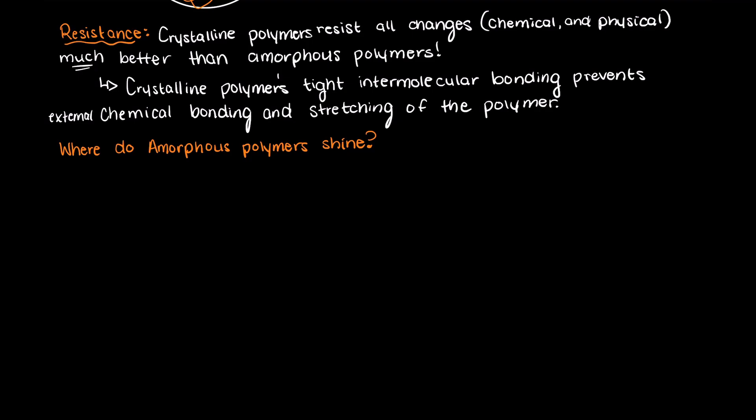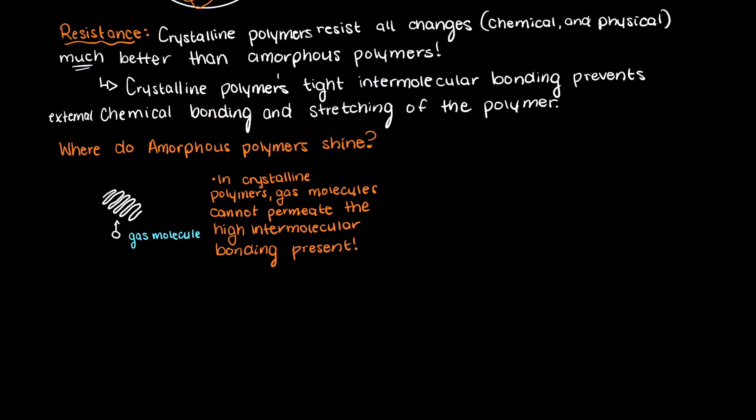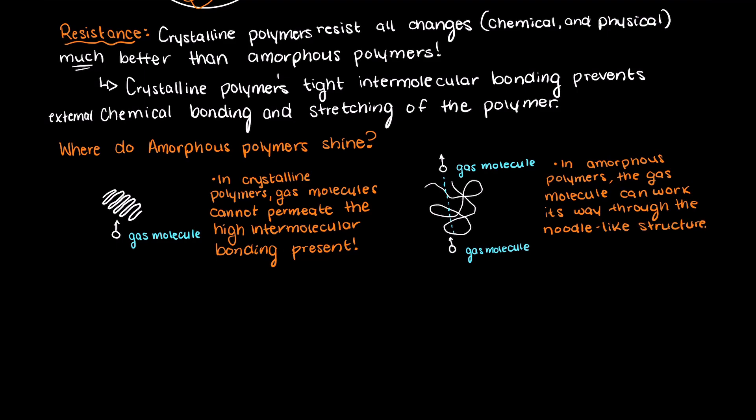There are many things that amorphous polymers can do that crystalline polymers just can't. For example, if you want to increase the gas transfer through your polymer for some reason, well then you are going to want a more amorphous polymer, as gas is often unable to permeate the tight intermolecular forces of crystalline polymers, whereas the noodle-like shape of amorphous polymers can allow gas molecules to pass through. Alternatively, if you want to prevent gas from transmitting through your polymer, you want a more crystalline polymer.